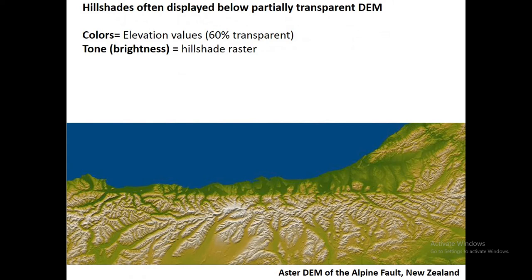Now, if we want to add color to that, it's actually pretty straightforward. All we have to do is put that new hillshade raster on the bottom, and above it bring our digital elevation model and assign a color scheme to it. In this example from New Zealand, high elevations are white and low elevations are dark green, and we drape that elevation raster over the hillshade and make it transparent — maybe 60% transparent. The colors come from the elevation values themselves, but the brightness or tone comes from the underlying hillshade. So everything has a color, but we still have dark areas in the shadow. What we're seeing here is the Alpine Fault in New Zealand, which underscores how powerful a hillshade raster can be in geologic interpretation.